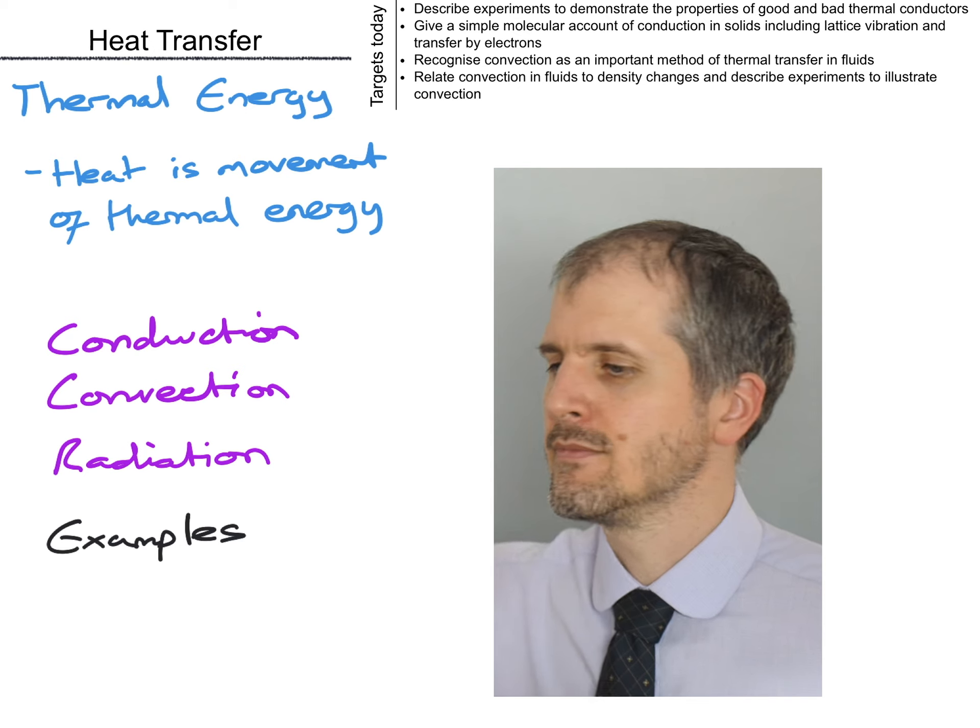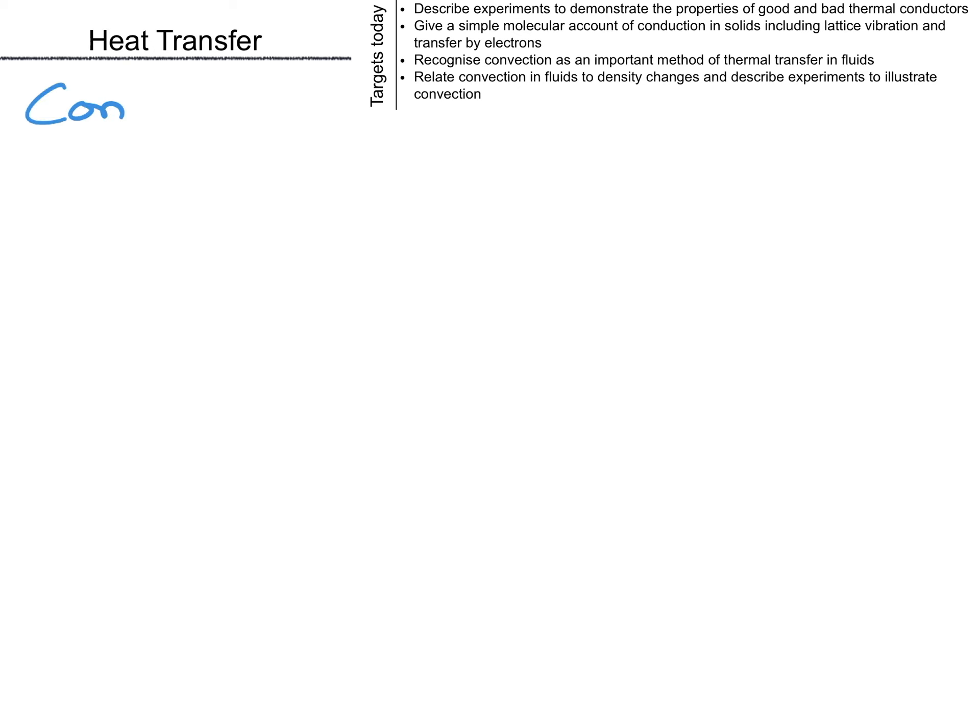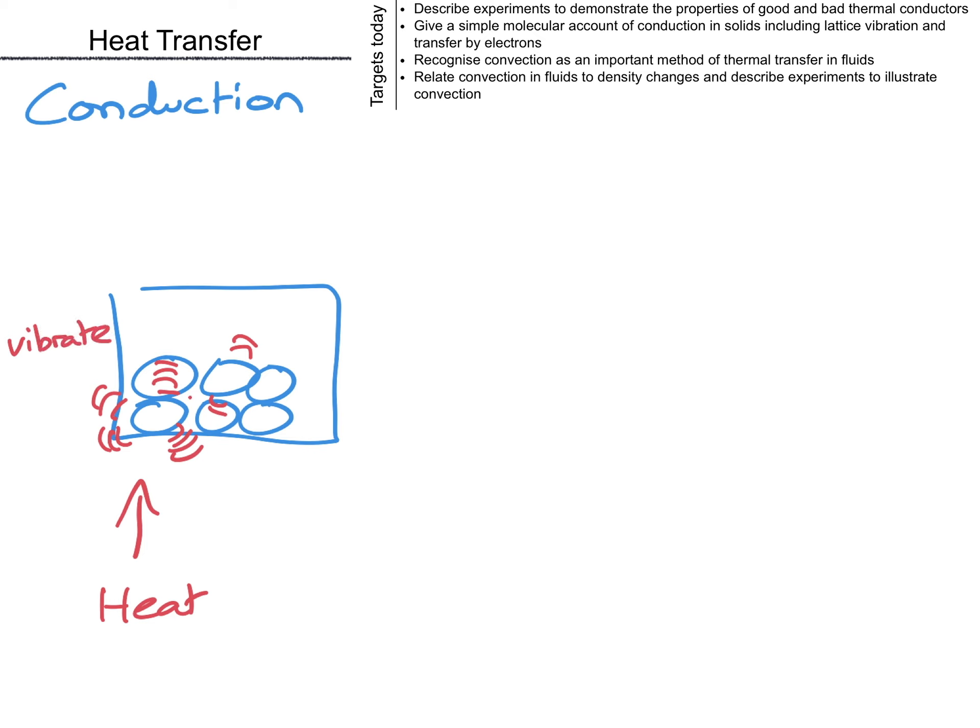Conduction first. In a solid, particles are vibrating, so they are moving. If we heat one end of a metal bar, the particles there will vibrate more vigorously. They then hit the particles next to them and pass on some of this energy. As this continues, the energy gets spread through the bar.